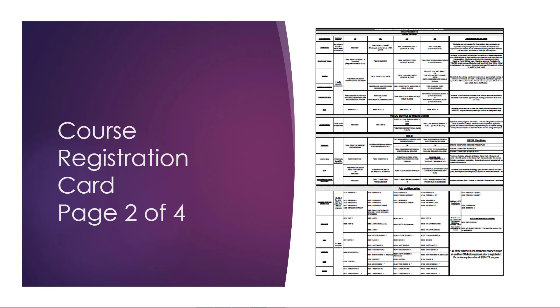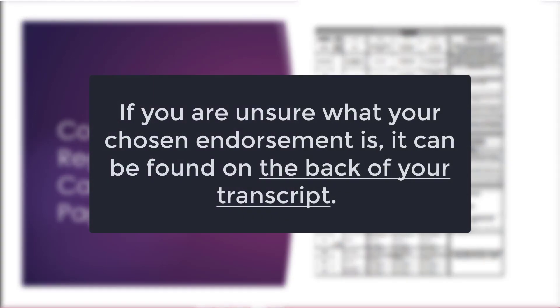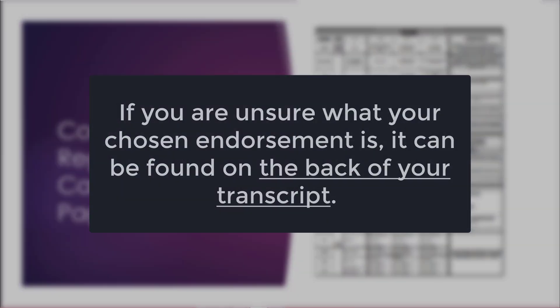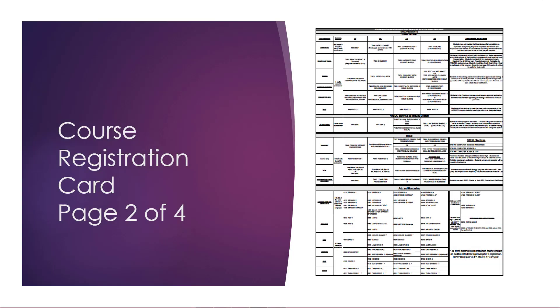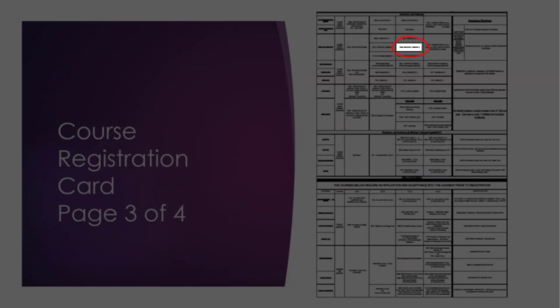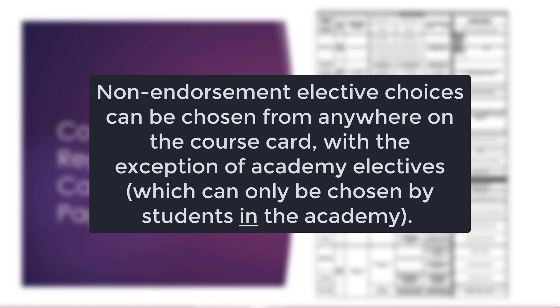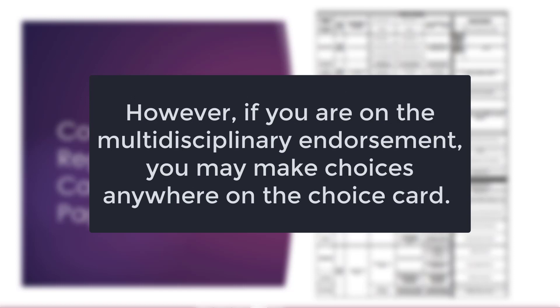For pages 2 and 3 of your course card, all available electives are listed by endorsement. If you are unsure what your chosen endorsement is, it can be found on the back of your transcript. Once you know your endorsement, locate it on the course card. For example, if you are in Graphic Design 1, you would look to the right and circle Graphic Design 2. Keep in mind that all students must sign up for 7 total courses. Non-endorsement elective choices can be chosen from anywhere on the course card, with the exception of academy electives, which can only be chosen by students in the academy. However, if you are on the multidisciplinary endorsement, you may make choices anywhere on the course card.